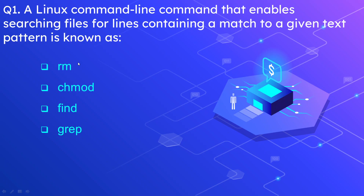Question number 1: A Linux command line command that enables searching files for lines containing a match to a given text pattern is known as — options are r, rm, chmod, find, and grep. The correct answer is grep. Grep is used to match a particular section or particular text in a Linux command output.